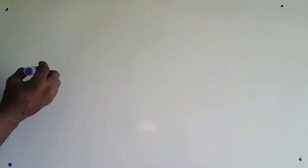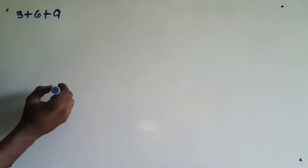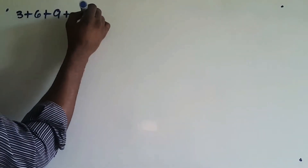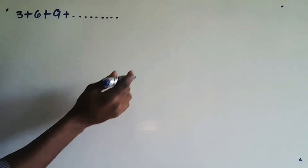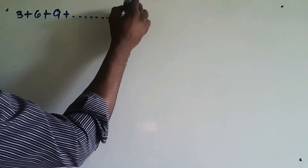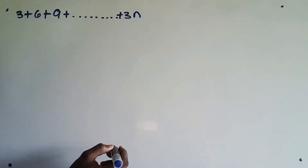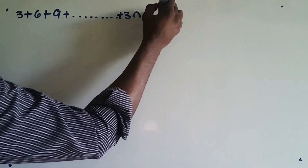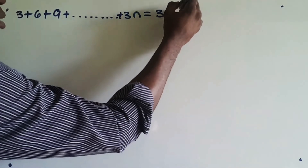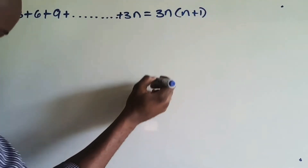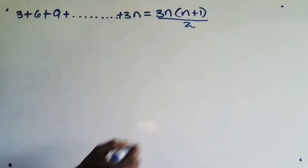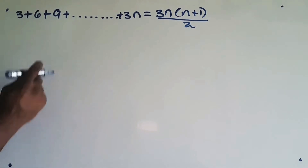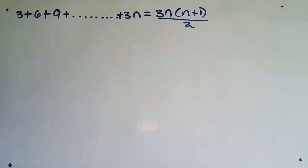In this video we will be looking at the proof by mathematical induction. We want to prove that 3 plus 6 plus 9 plus 15, going on in that fashion, plus 3n, is equal to 3n(n+1) all over 2. We want to prove this by mathematical induction.